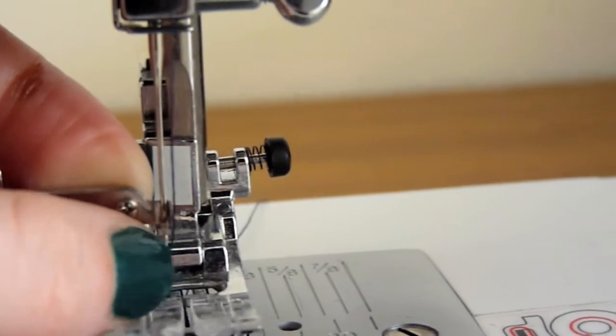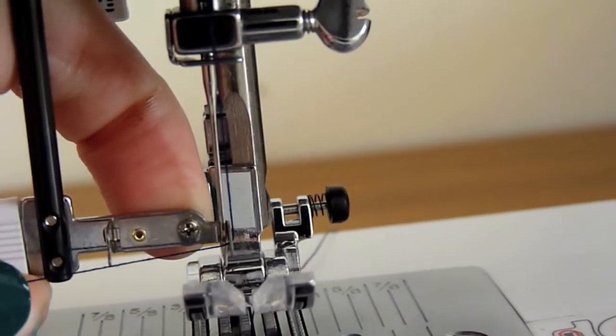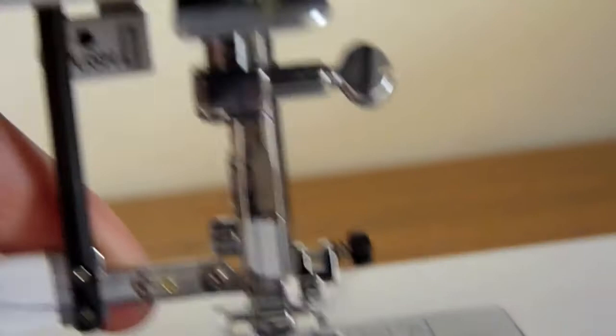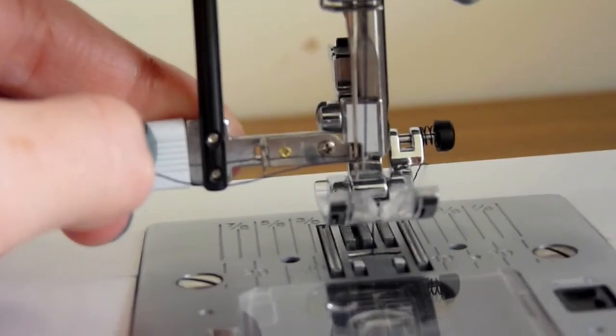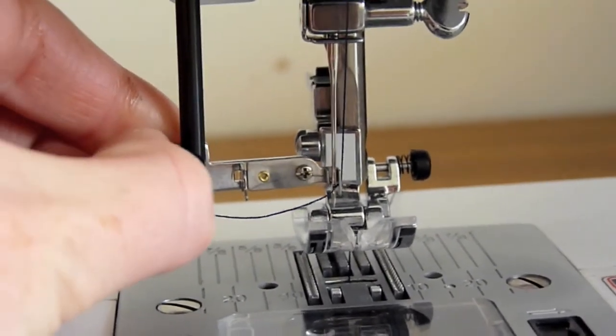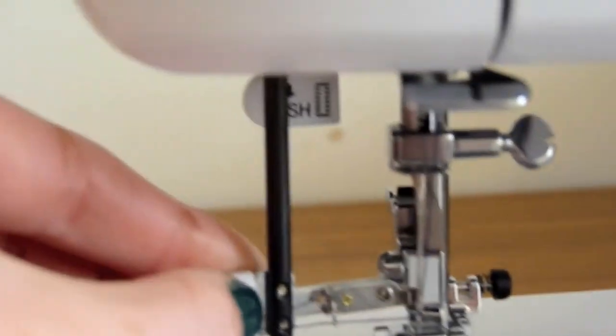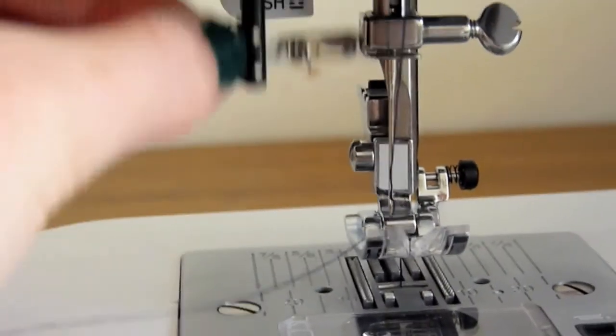So you want to take the thread. Okay, so you've hooked it under there, so it's caught under the little hook. You want to hold the thread tight so it doesn't come from the hook, and you want to pull that lever back and up.